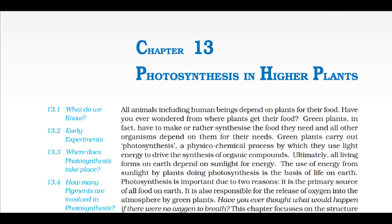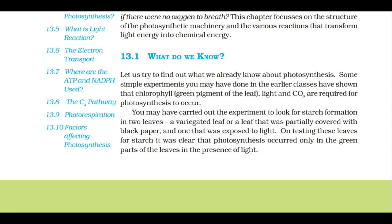Photosynthesis is important due to two reasons: it is the primary source of all food on earth, and it is also responsible for the release of oxygen into the atmosphere by green plants. This chapter focuses on the structure of the photosynthetic machinery and the various reactions that transform light energy into chemical energy.